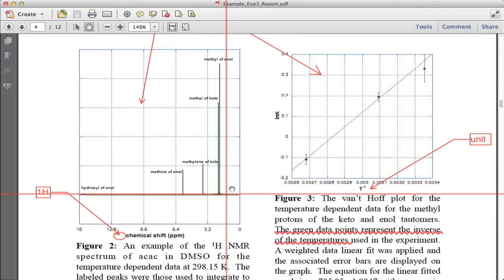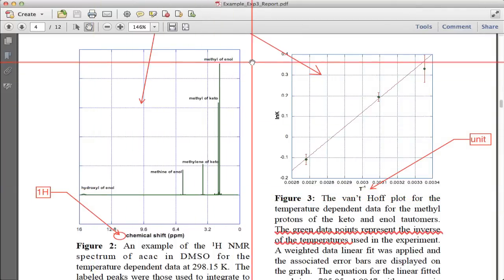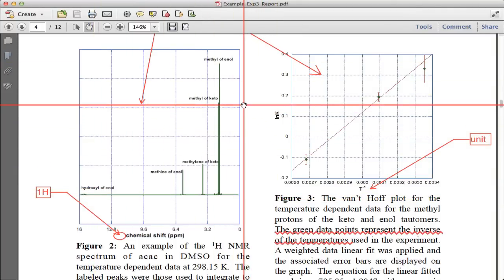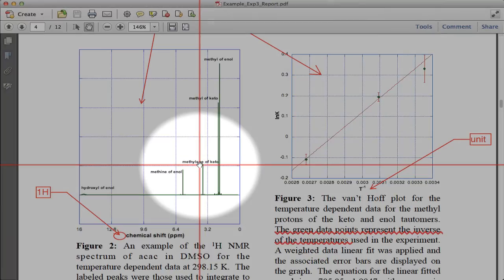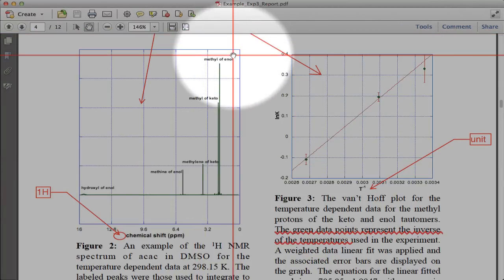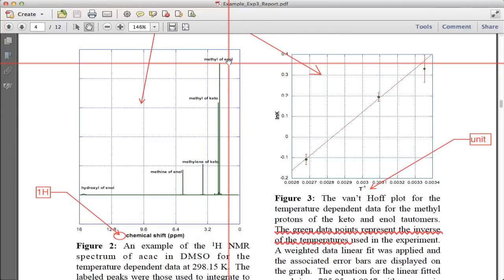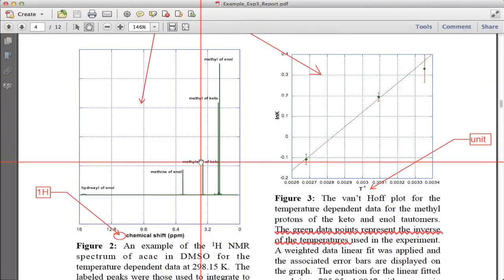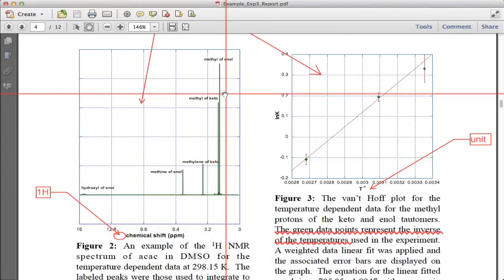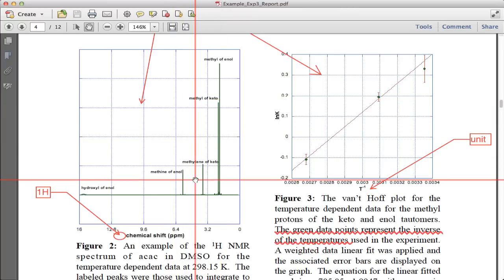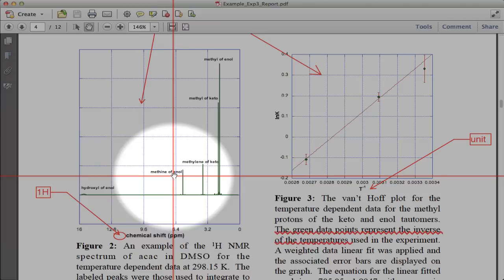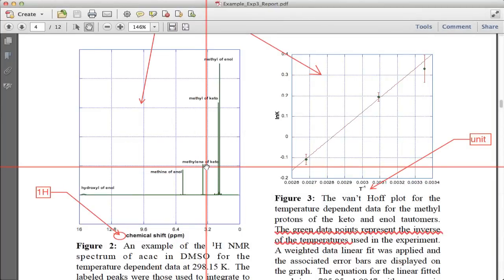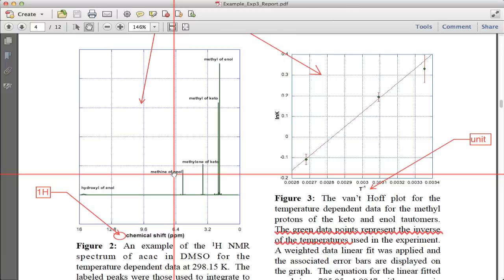They probably should blow that up and show that in a little more detail. You can integrate each of these peaks individually. You can do some for consistency like for example the methylene of the ketone versus the methyl of the ketone should be in a six to two or one to three ratio and you can make sure you get self consistency. Then of course when you average anything of the enol to the ketone it gives you the percent once you take into account how many protons are in each of those.